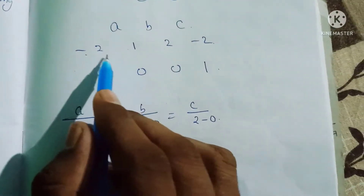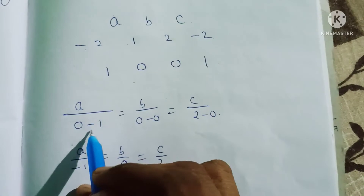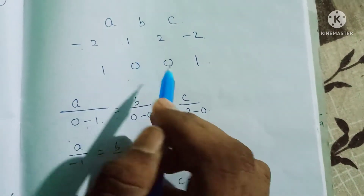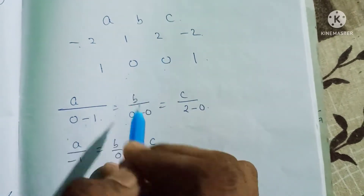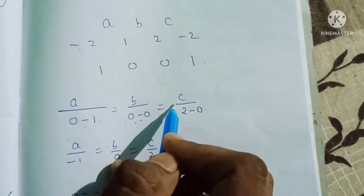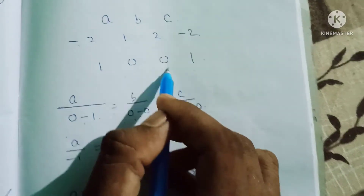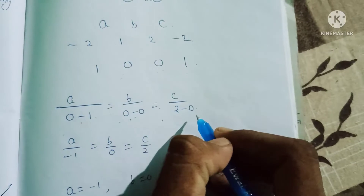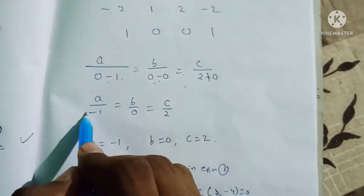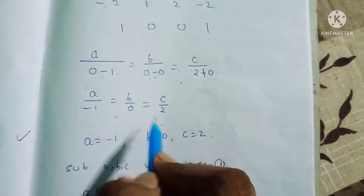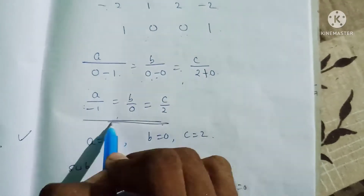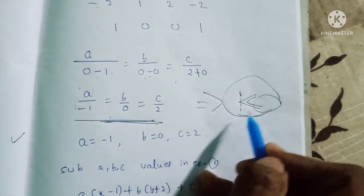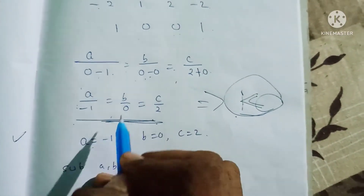Using cross-multiplication to solve for a, b, c: a/(-1) = b/0 = c/2. Setting each ratio equal to constant k, we get a = -k, b = 0, c = 2k.